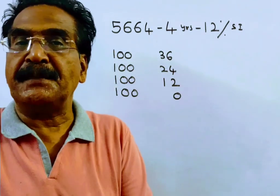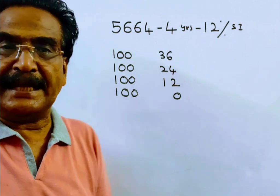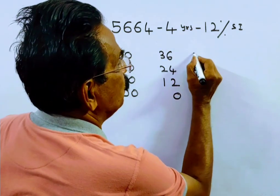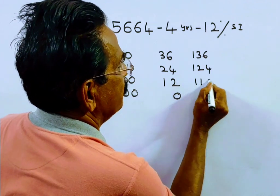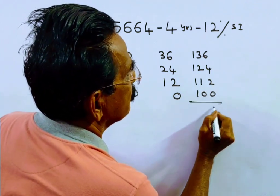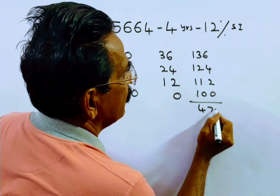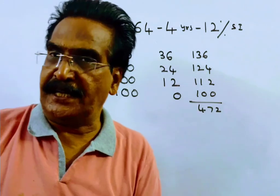So friends, if you pay an installment of rupees 100 per annum, then this amounts to 472 in 4 years.